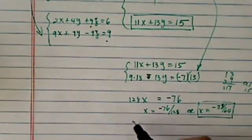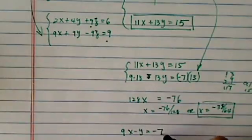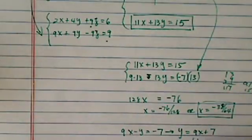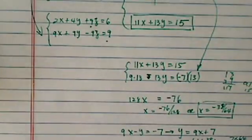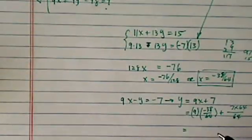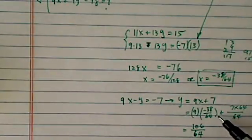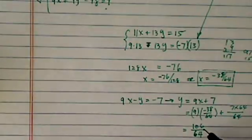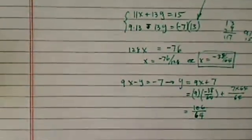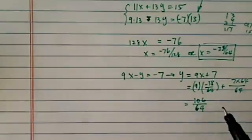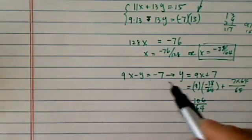After I get x, I'm going to use the equation 9x minus y equal to minus 7, so that y equals 9x plus 7. So y is equal to 9 times minus 38 over 64, plus 7 times 64 over 64. This number is not as pretty as we'd like, so you've got to be really careful. For this one, I have 166 over 64. Like I said, it's not a pretty number, but it's not hard — it's just a little tedious. I didn't simplify it all the way down, but maybe we'll simplify it at the end.